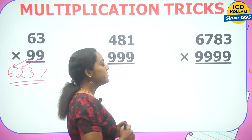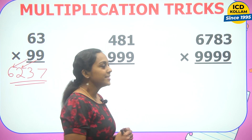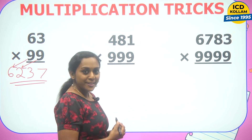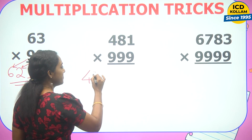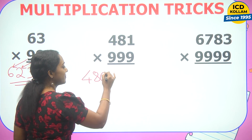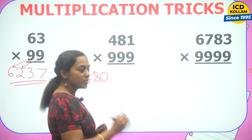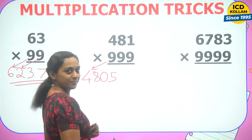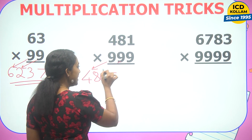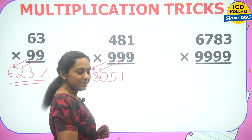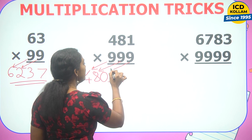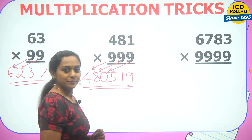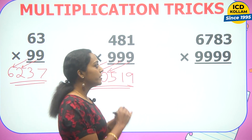Next question: 481 into 999. Step one: 481 minus 1 equals 480. Next step: 9 minus 4 equals 5, 9 minus 8 equals 1, 9 minus 1 equals 9. So the answer is 480519.